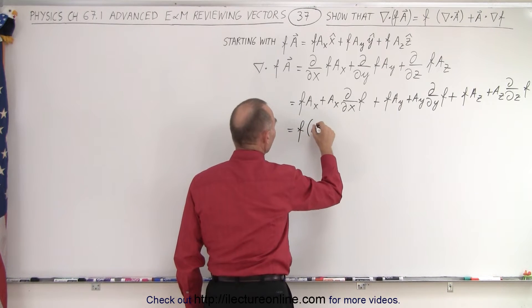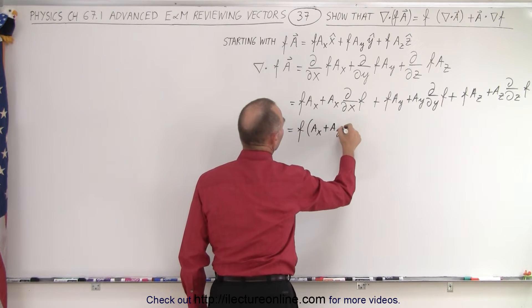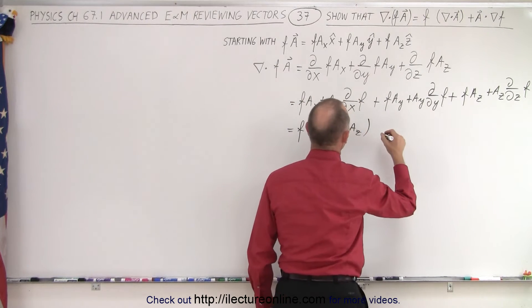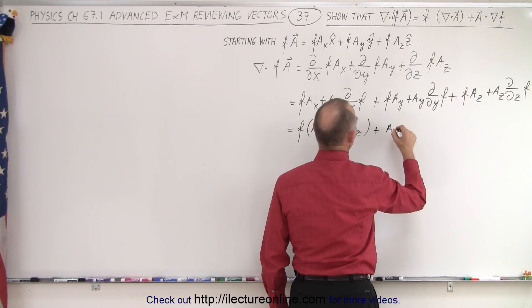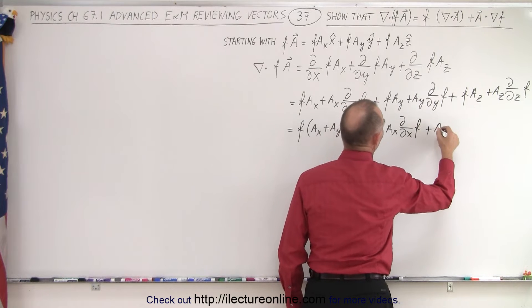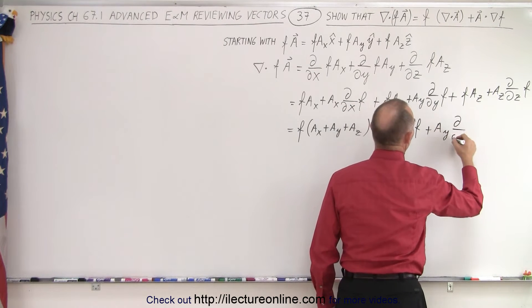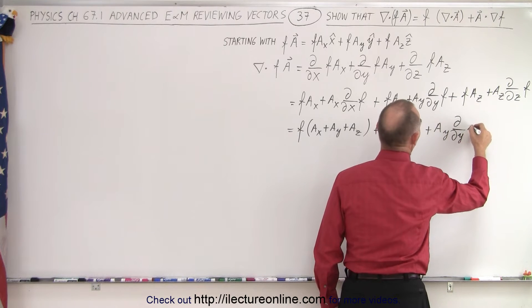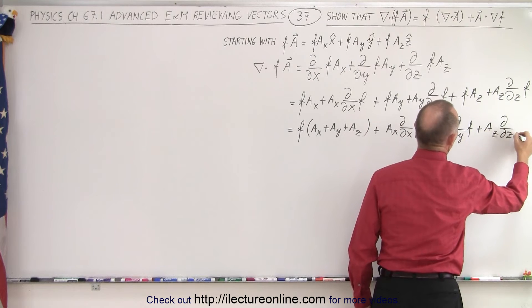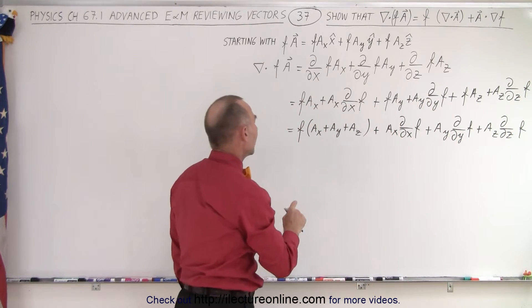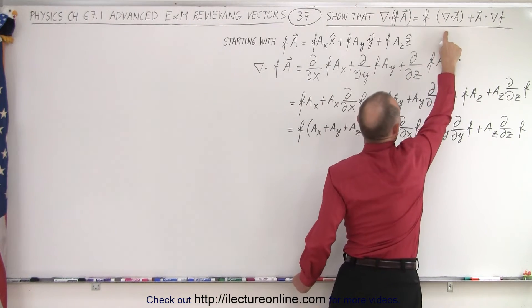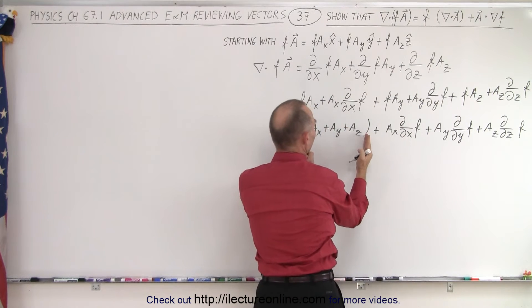We can factor out f. So we can say it's equal to f times A sub x plus A sub y plus A sub z. Then we have the remaining three terms: plus A sub x times the partial with respect to x of f, plus A sub y times the partial derivative with respect to y of f, plus A sub z times the partial derivative with respect to z of f.